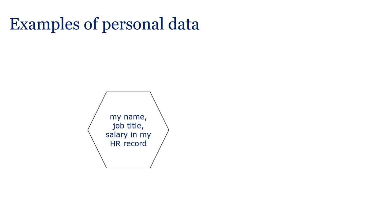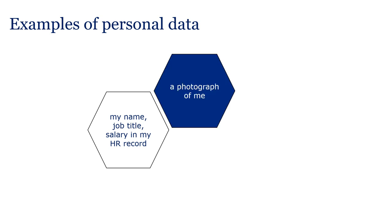In most cases, the data will obviously be about an individual who can be identified from it. For example, the ICO holds my personal data in a record which includes my name, job title and salary. The question of a photograph is less clear. Whether a photo of me is personal data will depend on the nature of the picture — am I identifiable from the photo, is the image linked to my name, am I the focus of the photo? If people are incidentally captured in an image, for example a busy street scene, the image is unlikely to be personal data.